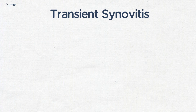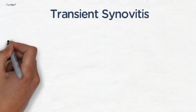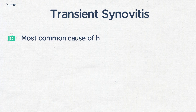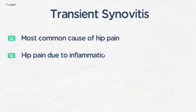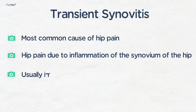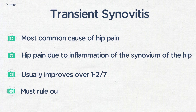The most common cause of hip pain in children, however, is transient synovitis. This is hip pain due to inflammation of the synovium of the hip. This normally will improve over one to two days, normally assisted with simple analgesics, but you must rule out other pathology.